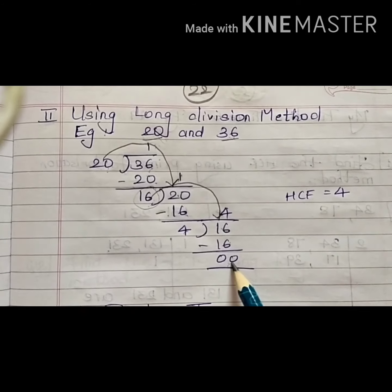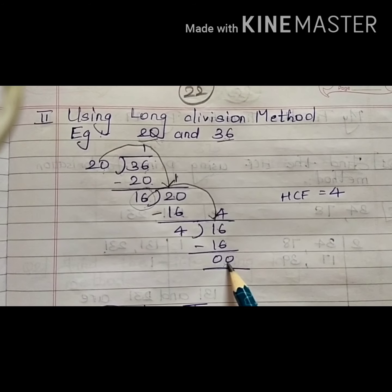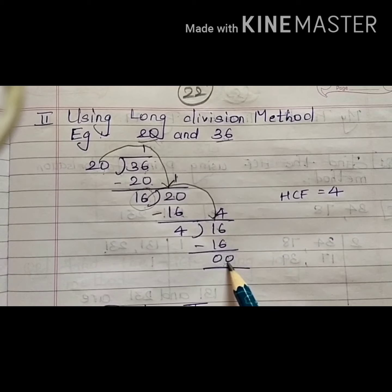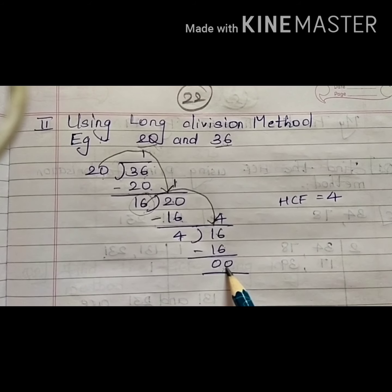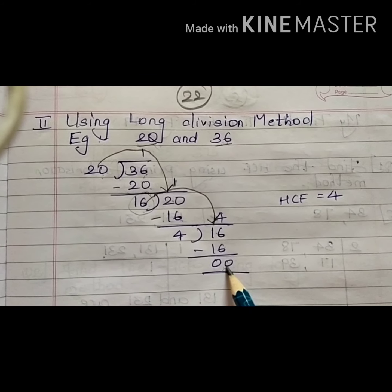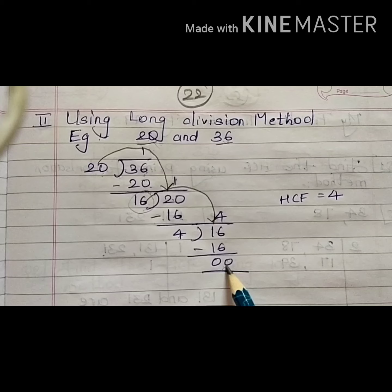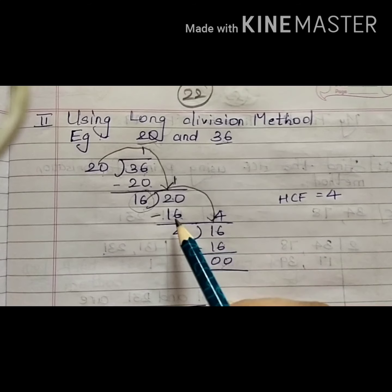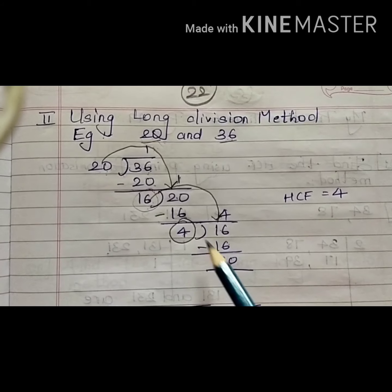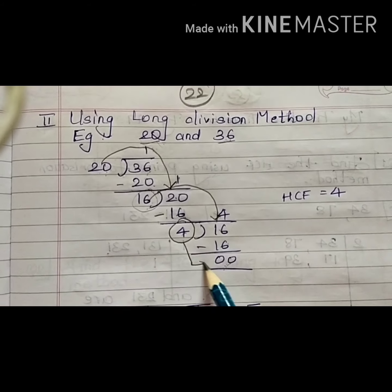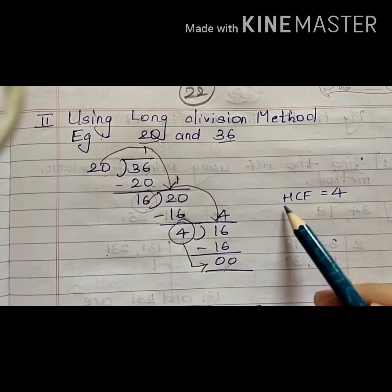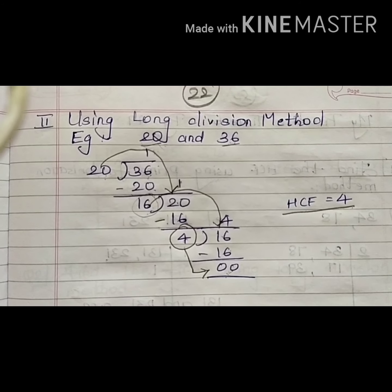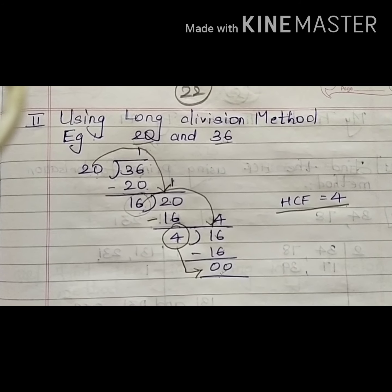Once I get remainder 0, my sum is over. Usually in division the quotient is considered the answer, but here for the long division method of HCF, the divisor that gives you remainder 0 is your HCF. This was just an example — I will explain a few more sums from your exercise.